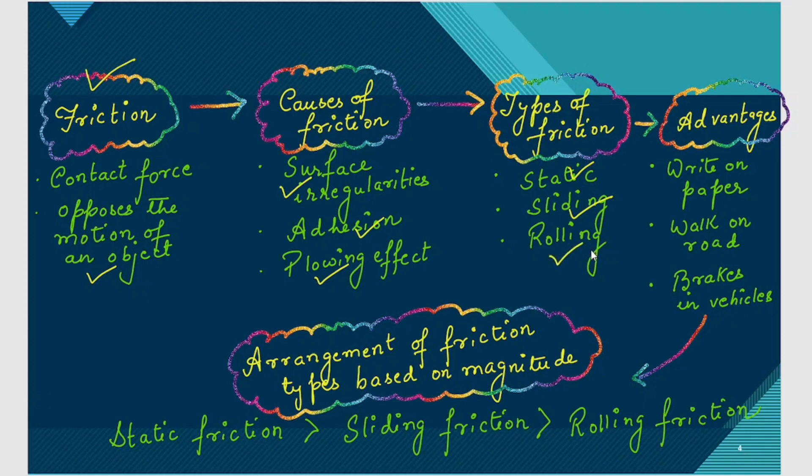Now, what are the advantages of friction? Because of friction we can write on paper, walk on road, and the brakes in vehicles are used to stop it. All of these are due to friction only.